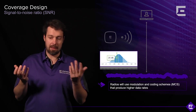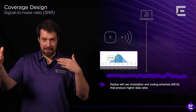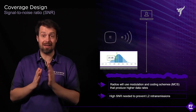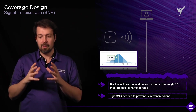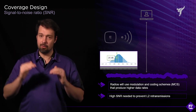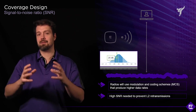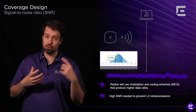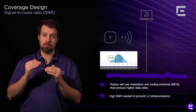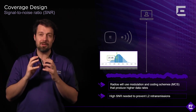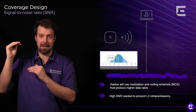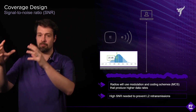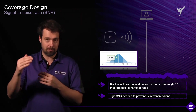Radios use modulation and coding schemes, or MCS, to determine the data rate between the access point and the client device. The better the SNR, the more complex the MCS and the higher the data rate. The lower the SNR, the simpler the MCS and the lower the data rate. You want to sustain good SNR throughout your environment. The minimum SNR is 20 dB, but typically 25 dB or better is recommended. If you want to use the high data rates supported by 802.11ac and 802.11ax, you're looking at over 30 dB of SNR. This is why it's important to know what applications and clients your network is designed for.